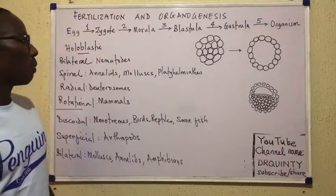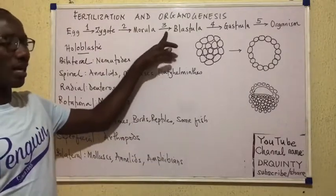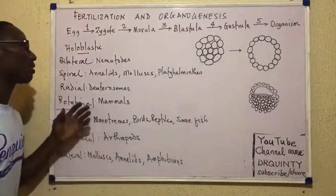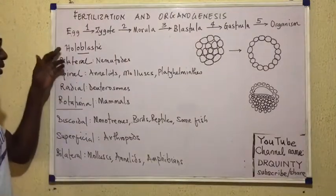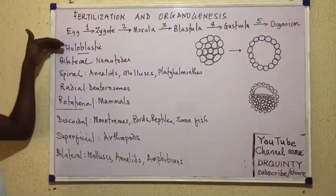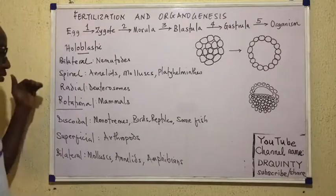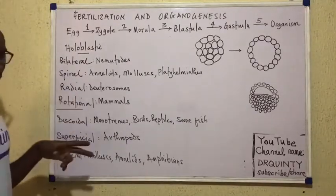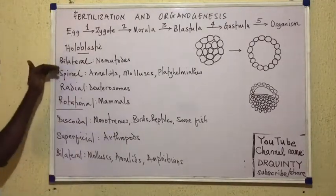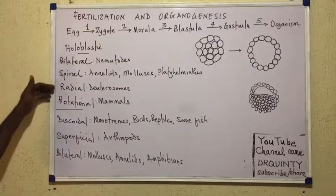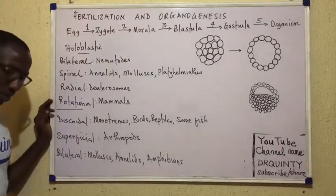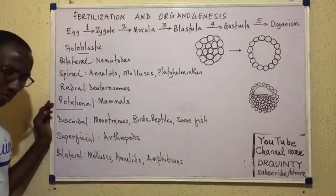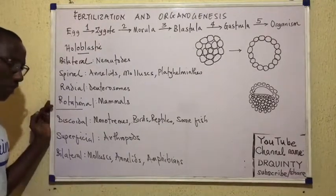So what happens to the morula is blastulation. But before blastulation, I mentioned that cleavage could be holoblastic or meroblastic and that each of them had patterns. What I've put here is some examples of organisms that undergo each of those types of cleavage as well as the specific pattern.